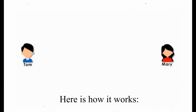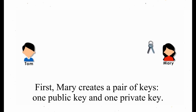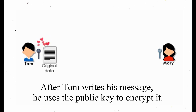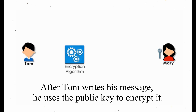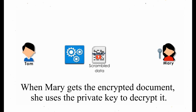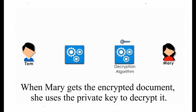Here is how it works. First, Mary creates a pair of keys — one public key and one private key. She keeps the private key and gives the public key to Tom. After Tom writes his message, he uses the public key to encrypt it. When Mary gets the encrypted document, she uses the private key to decrypt it.